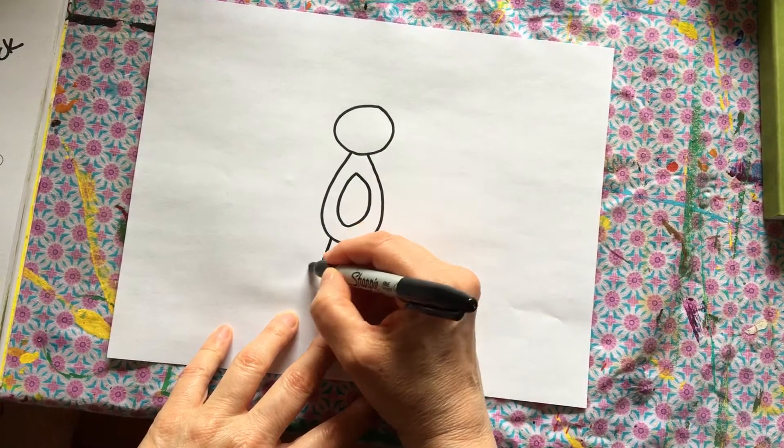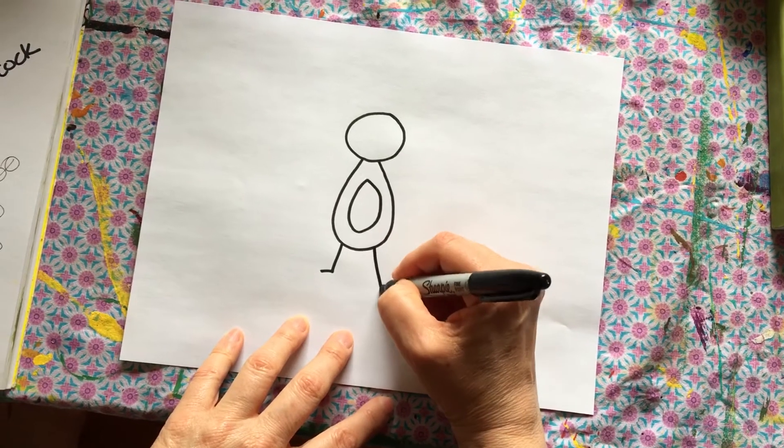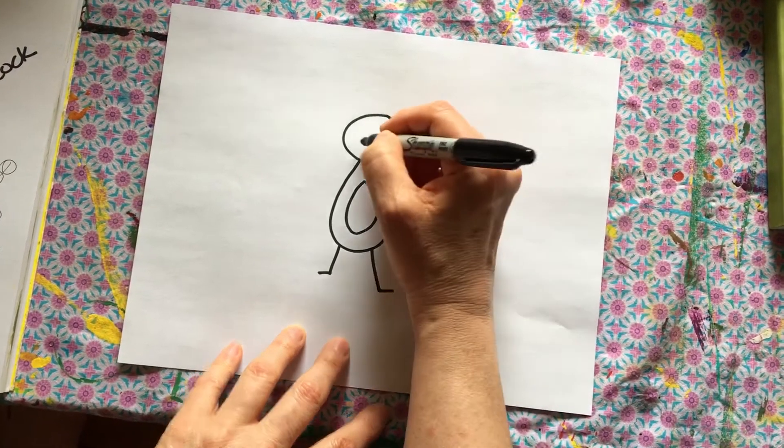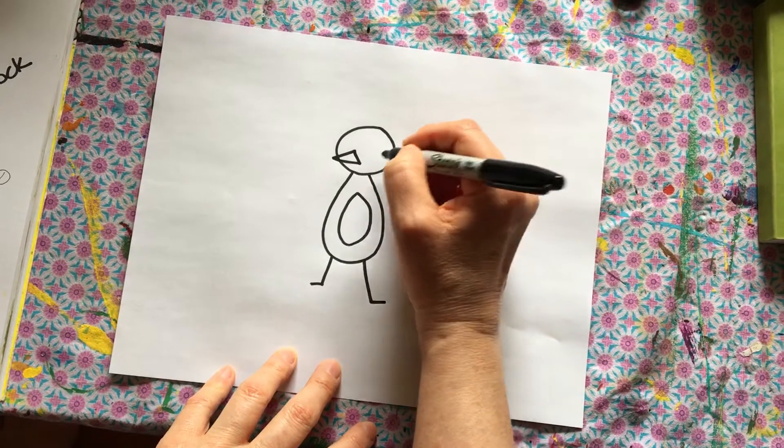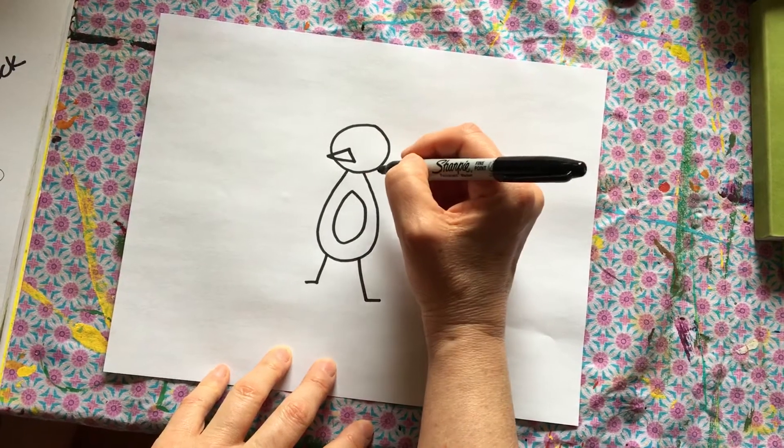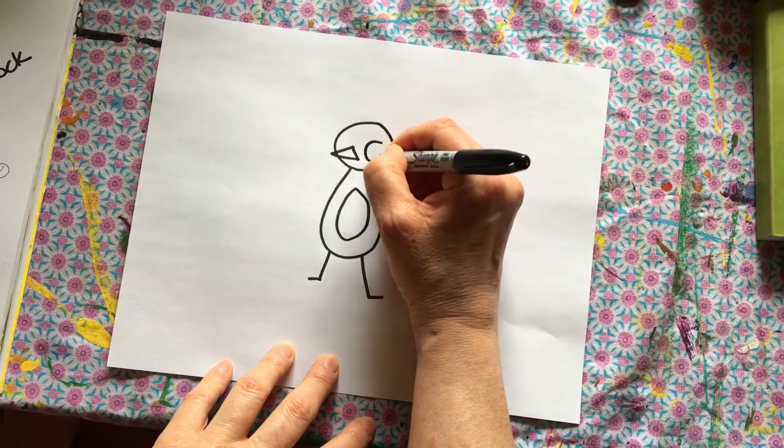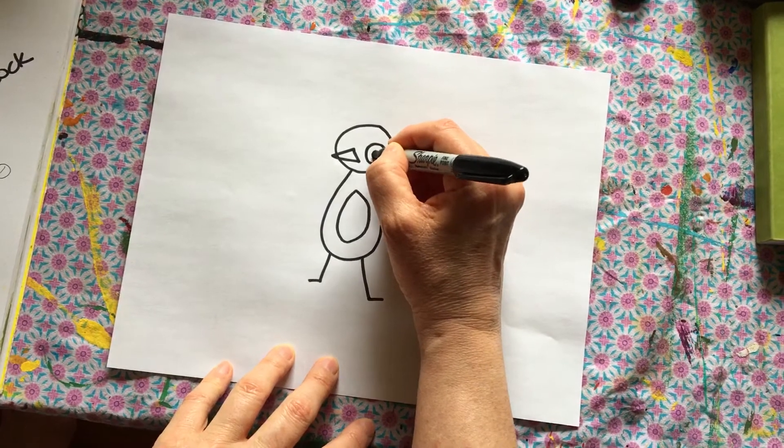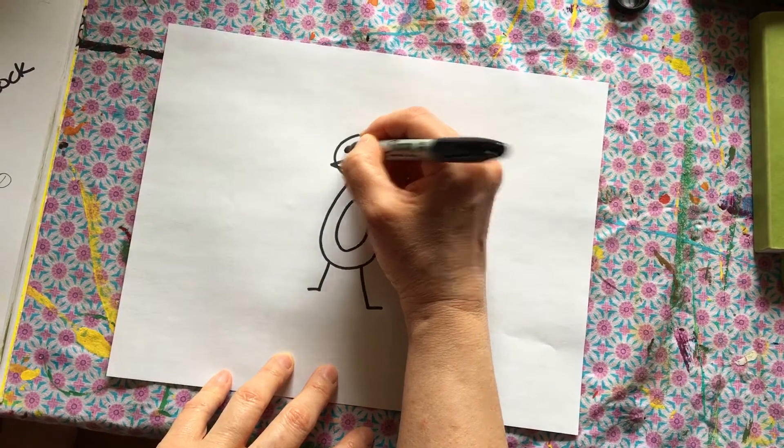one leg, another leg, pretty beak, that's a triangle by the way. We'll make one big eye, one little eye,